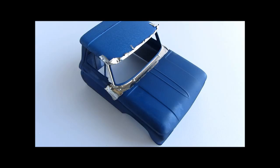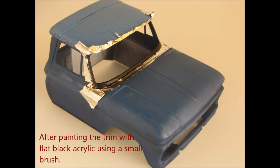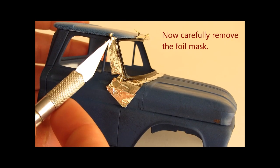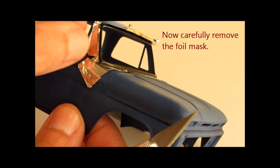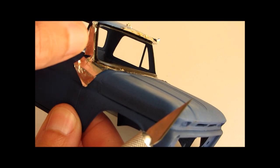Here's what it looks like after you've painted the bare metal foil mask. Now, of course, you need to remove the mask. Just go section by section.